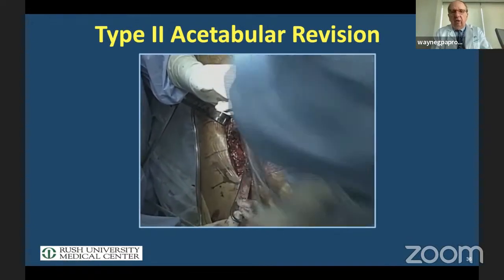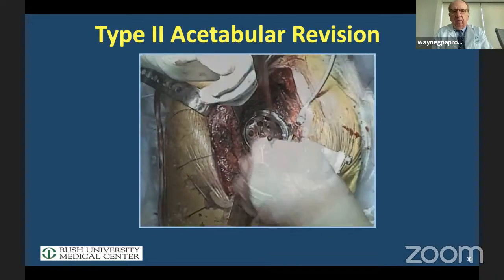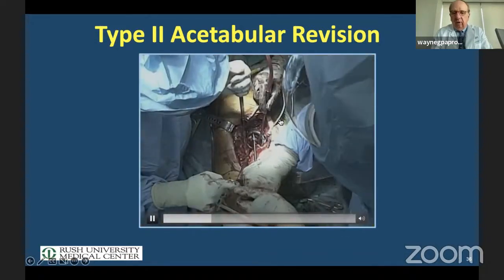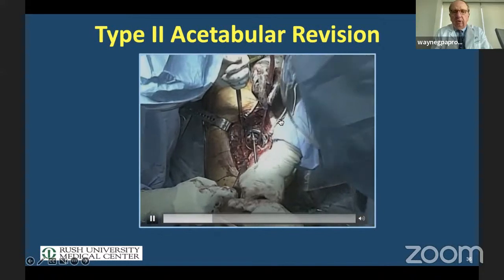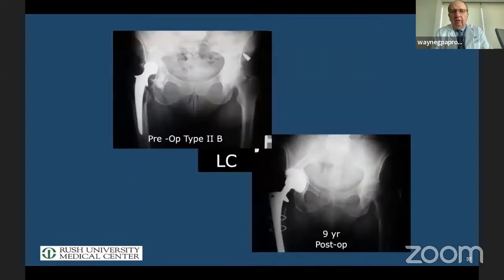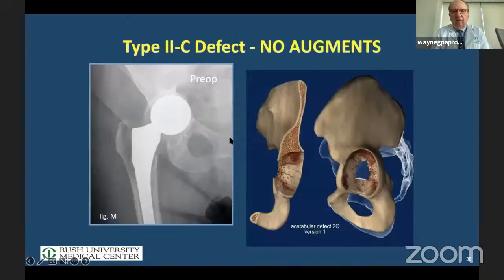Every revision regardless of the situation — and you can see we don't care that there's 30% uncovered — always put screws in. Here's an example: a little bit of migration but less than three centimeters, a little bit of damage to Kohler's line, but the migration still enables us to get a press fit.